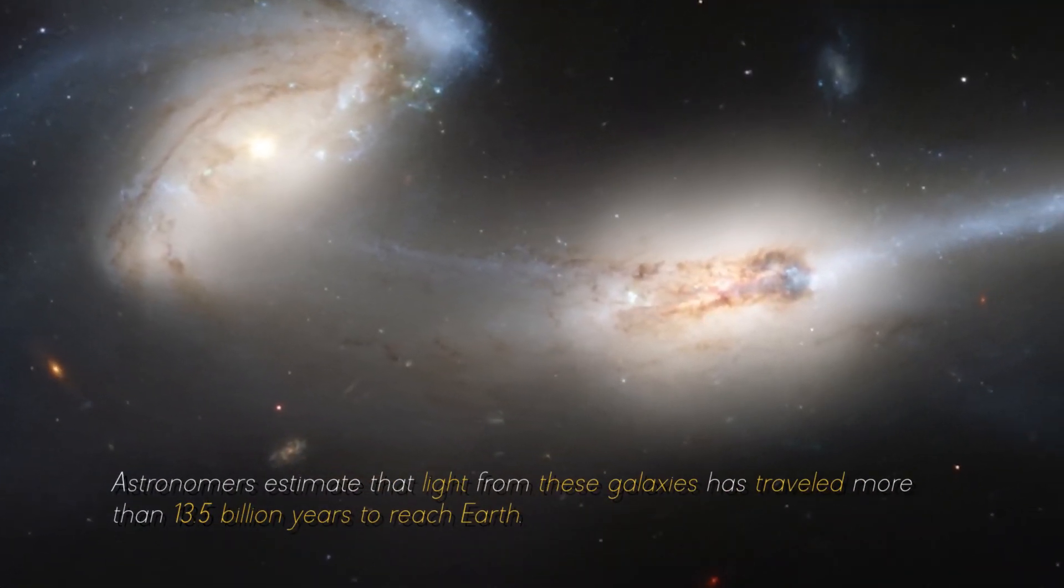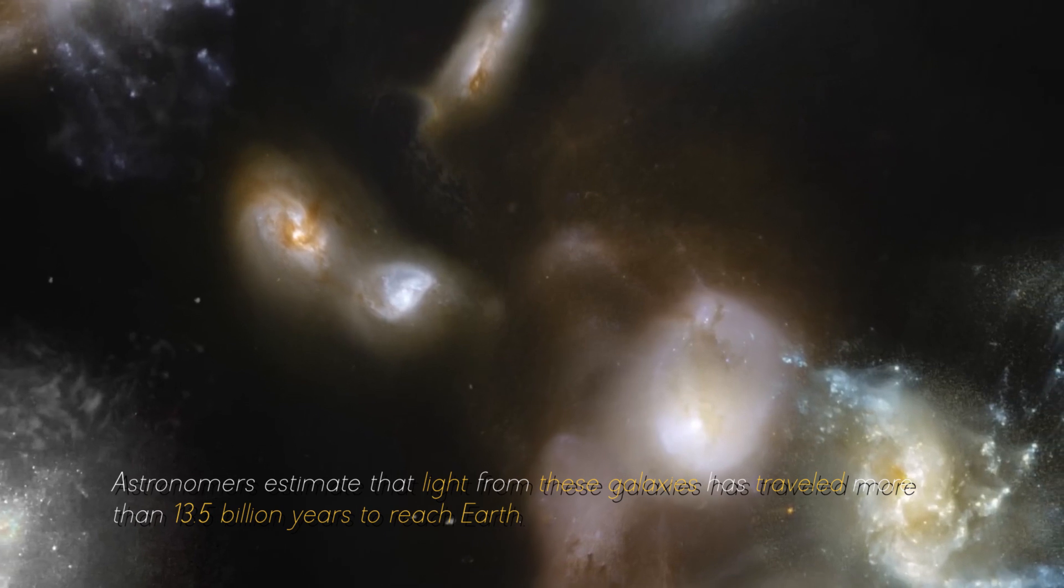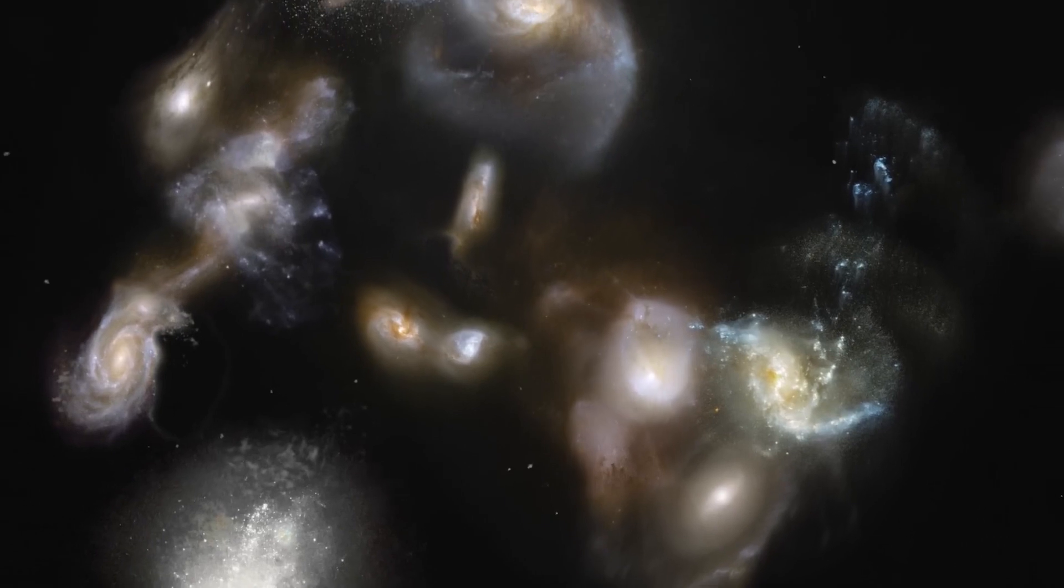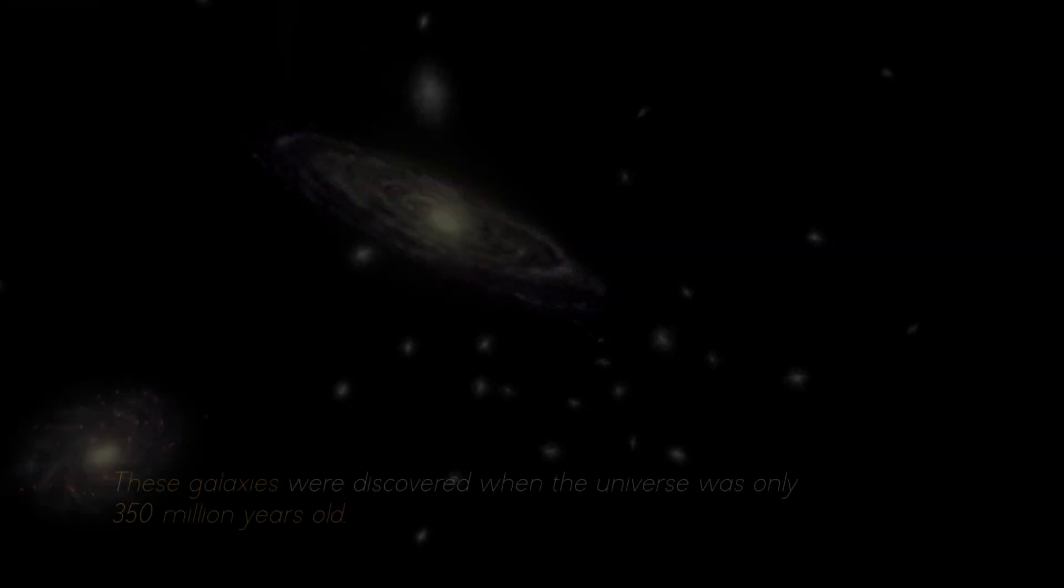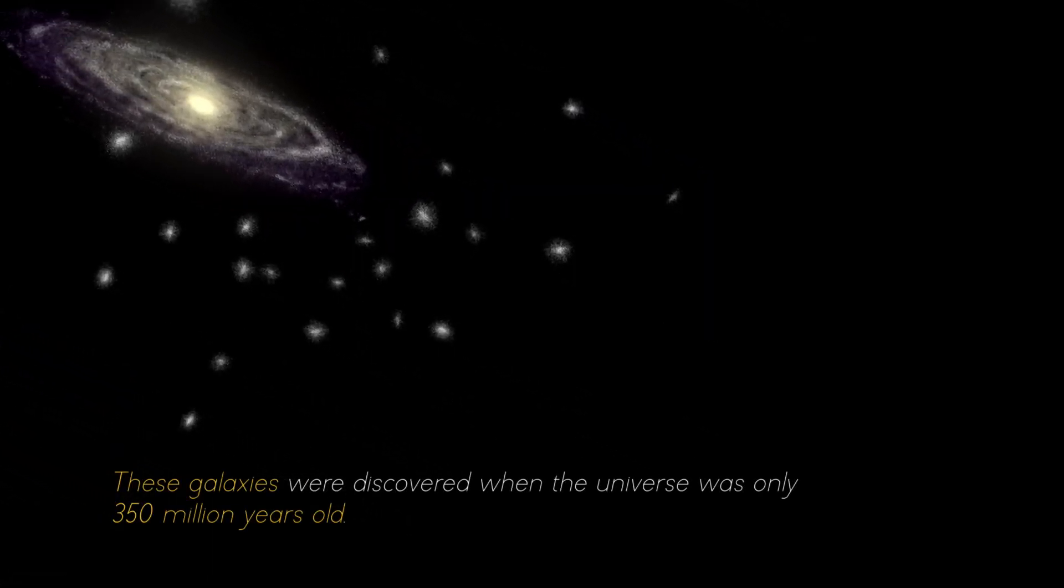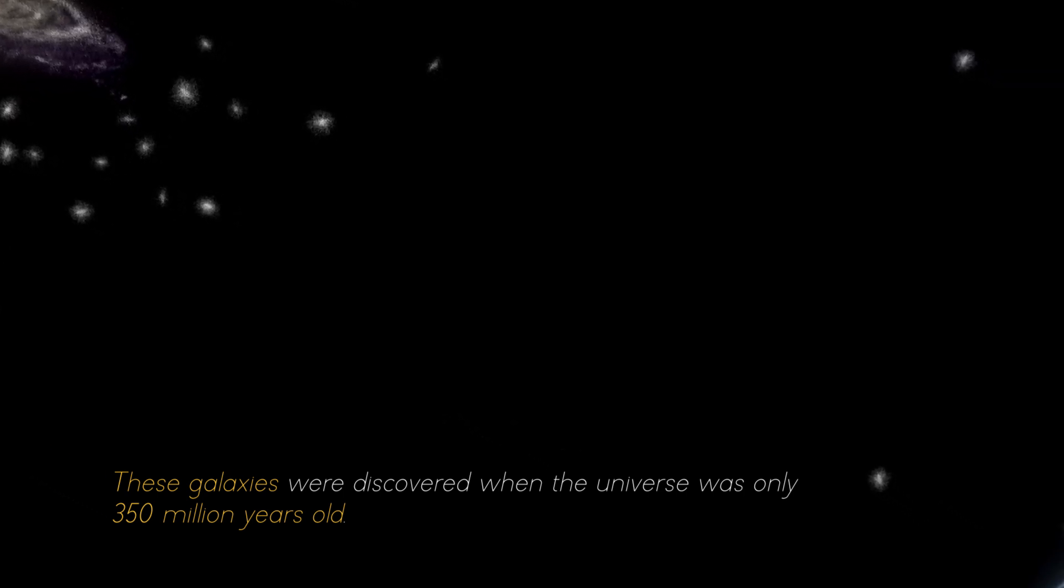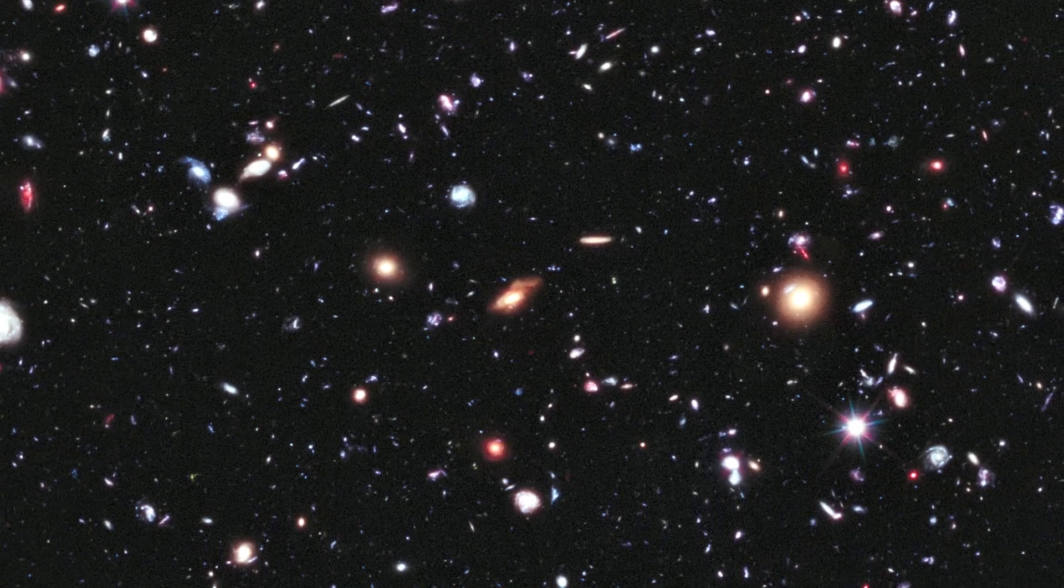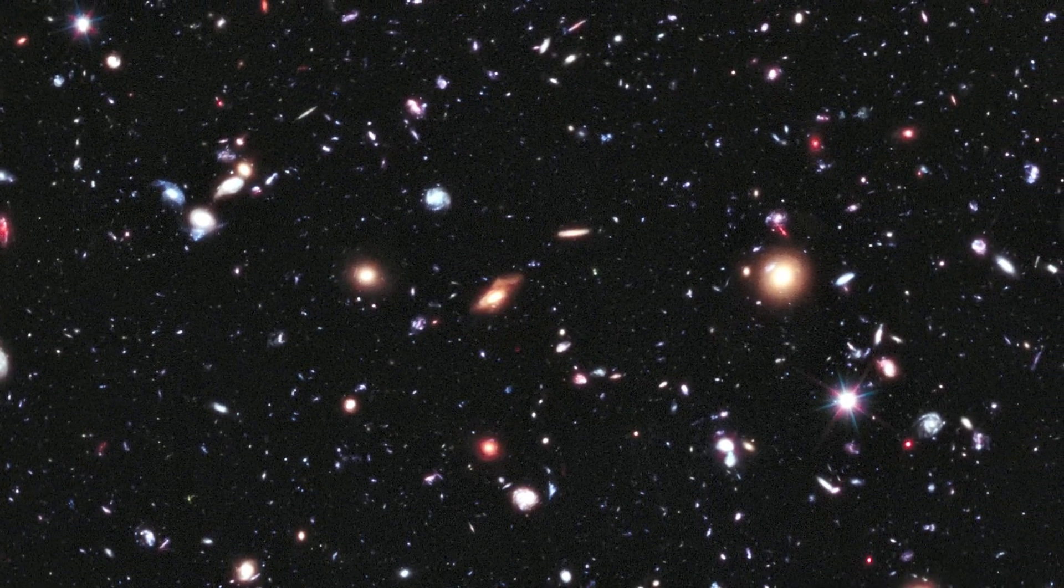Astronomers estimate that light from these galaxies has traveled more than 13.5 billion years to reach Earth, giving us a glimpse into the distant past of the universe. These galaxies were discovered when the universe was only 350 million years old, shedding light on how quickly the first generations of galaxies emerged. Spectral data confirmed that these galaxies are at the edge of our view, some even further away than Hubble could see.